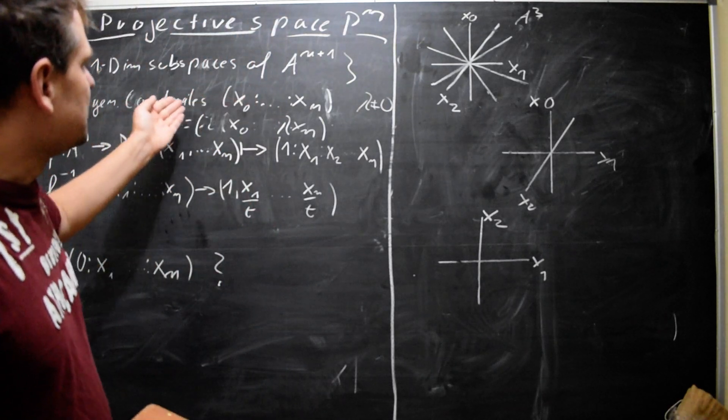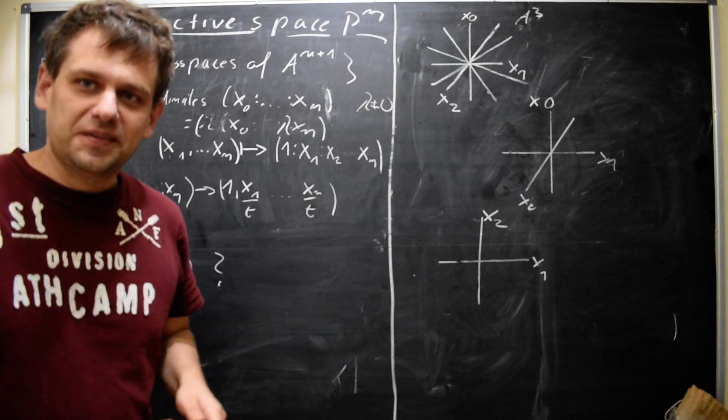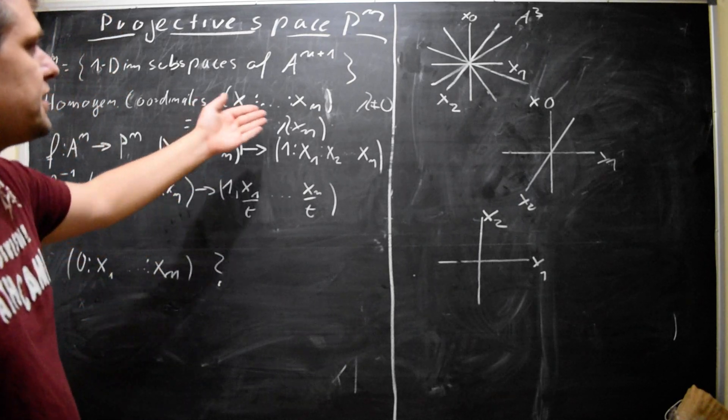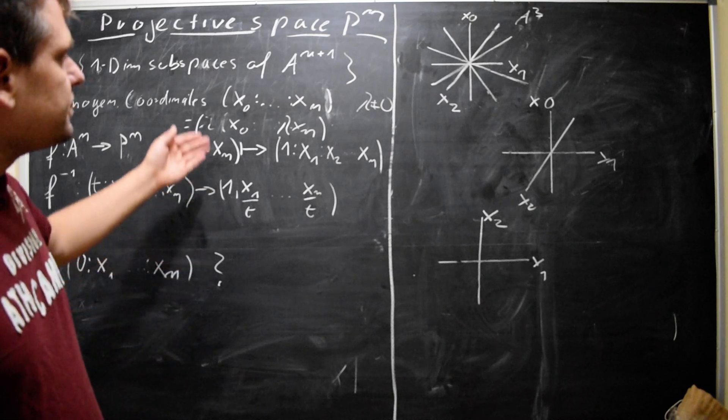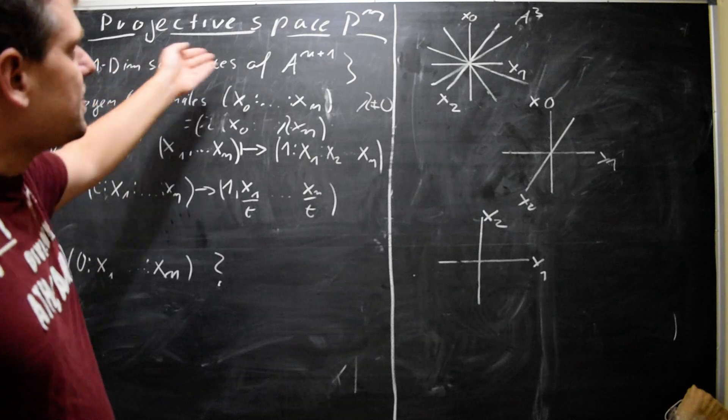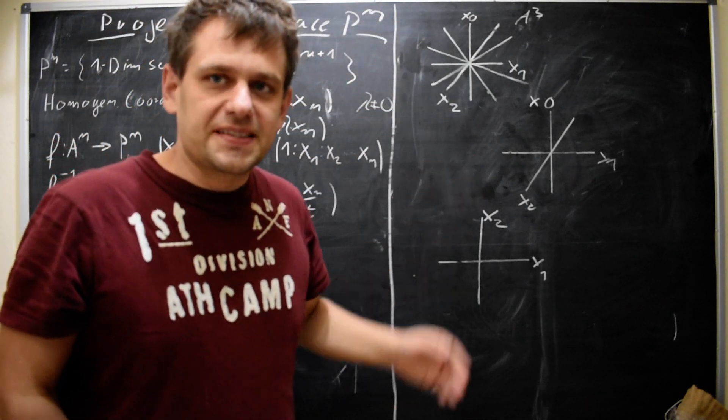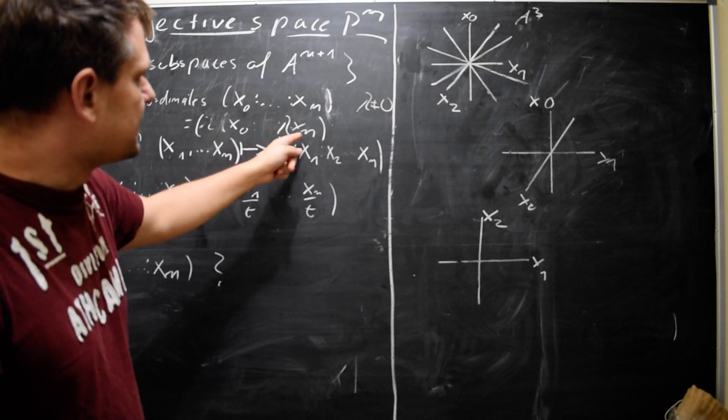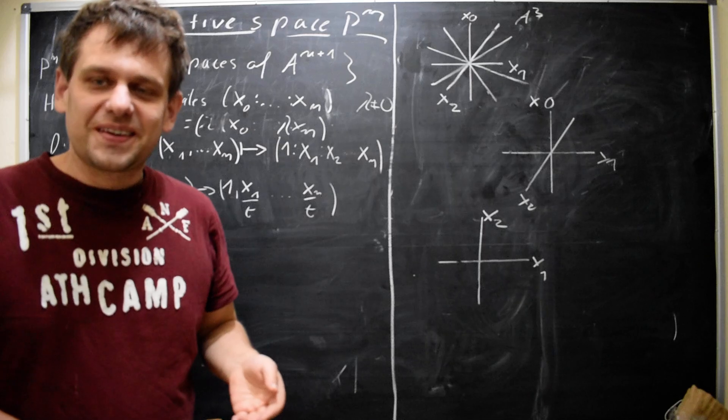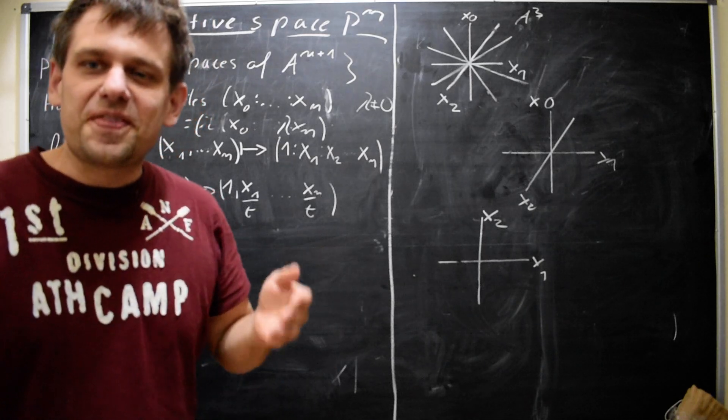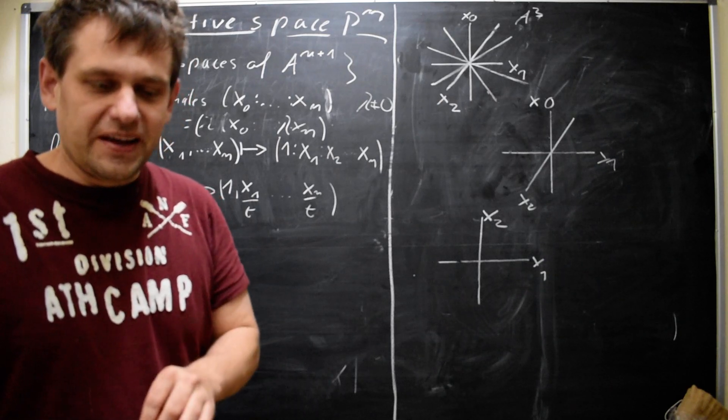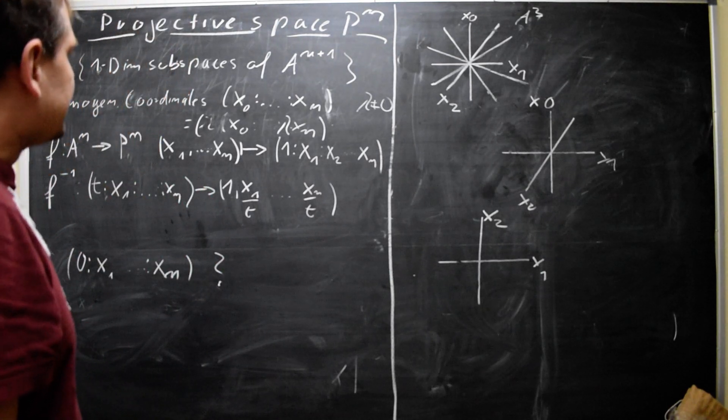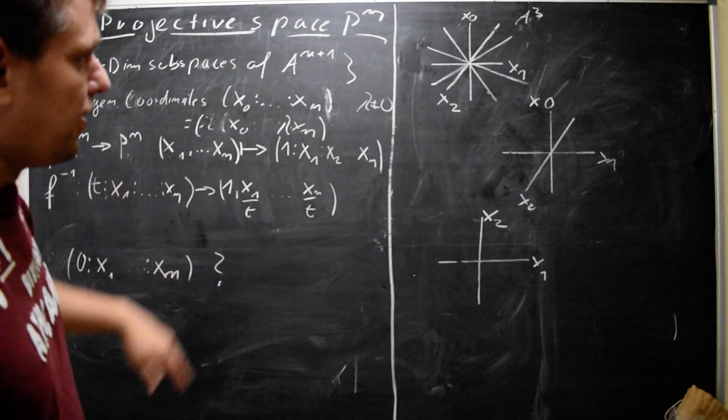So, as I said, these homogeneous coordinates are only defined up to multiplication by non-zero lambda. And, well, another way to say it is, the points in the projective space are really equivalence classes. Equivalence classes of vectors. This vector is in the same equivalence class as this one. Or, in other words, two vectors are in the same equivalence class if there is some non-zero lambda such that multiplying the first by lambda gives the second. And, well, that is already the definition of projective space.